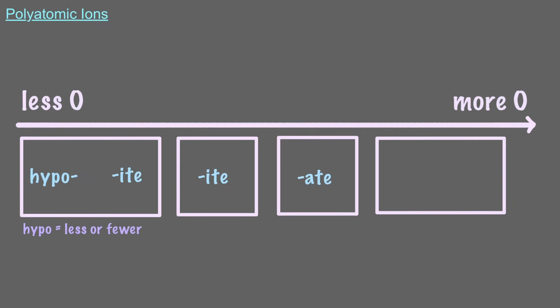If a nonmetal makes 4 different anions with oxygen, we keep these rules but now the species with the greatest number of oxygens has the prefix per, like hyper, meaning more, in addition to the suffix ATE.